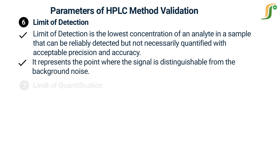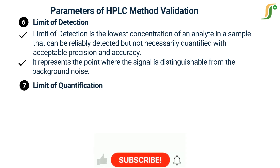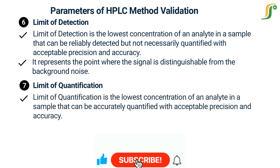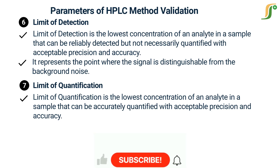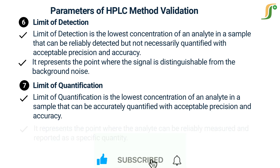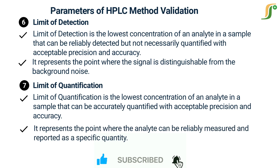The seventh parameter is limit of quantification. Limit of quantification is the lowest concentration of an analyte in a sample that can be accurately quantified with acceptable precision and accuracy. It represents the point where the analyte can be reliably measured and reported as a specific quantity.